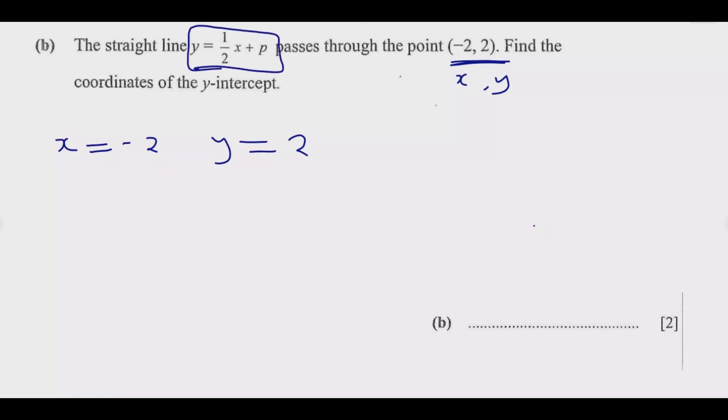So in this equation, since the line is passing through here, then we can substitute to find the value of p. So it means y = ½x + p, where y = 2 equals ½ times x, and we're putting -2, plus p.